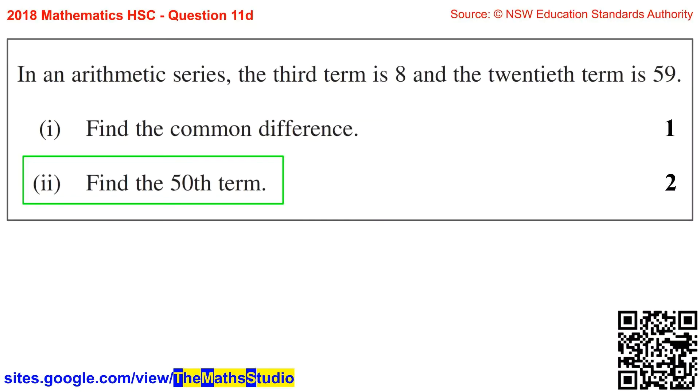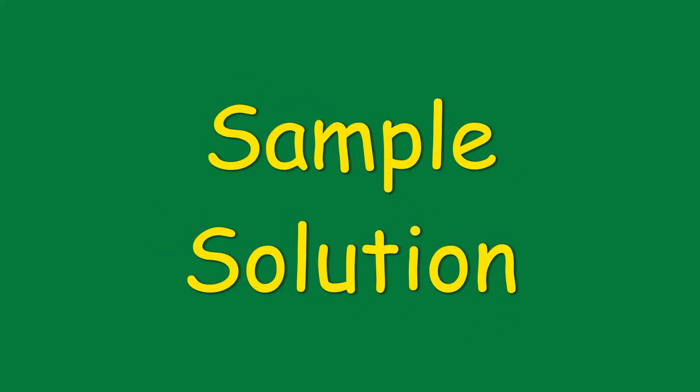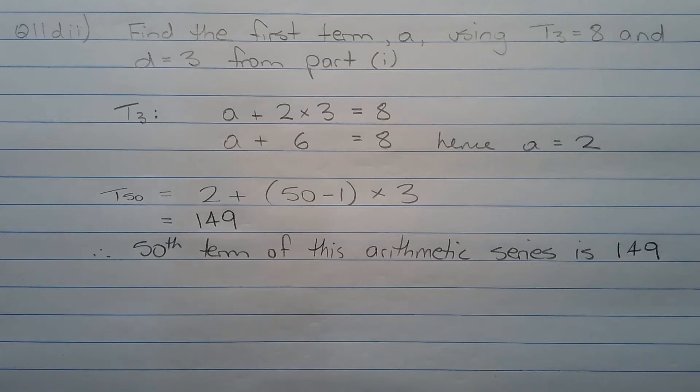Part 2: Find the 50th term. The first step is to find the value of the first term, a, of this arithmetic series using T3 equals 8 and common difference d equals 3 from part 1.